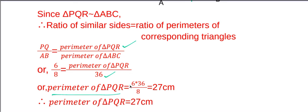If we divide 6 by 2, it will be 3. 3 into 9 is 27. Therefore, the perimeter of triangle PQR is 27 cm.